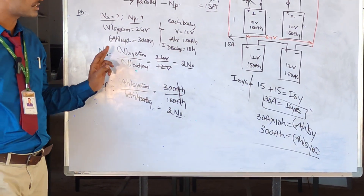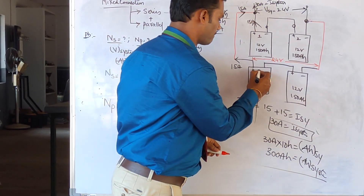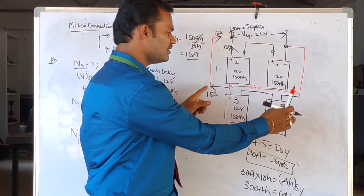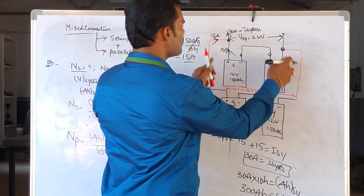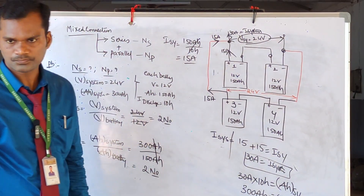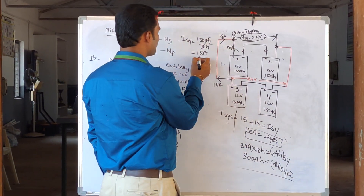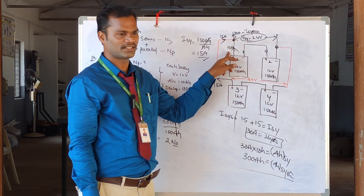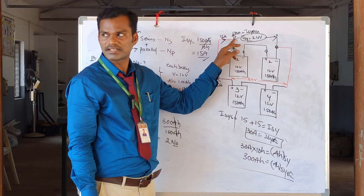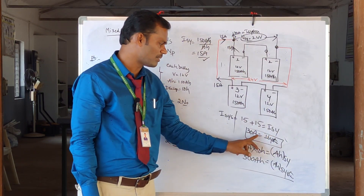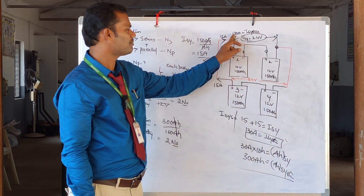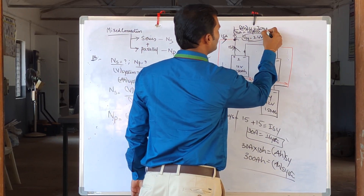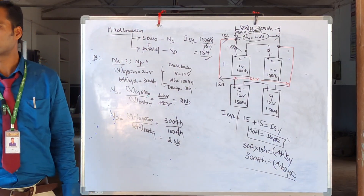To summarize: the first and second batteries are connected in series to generate 24 volts. The third and fourth batteries are also connected in series generating 24 volts. Both series sets are then connected in parallel. Each set supplies 15 Amperes, so applying KCL, 15 + 15 = 30 Amperes is the system current. The total AH capacity is 30 Amperes × 10 hours = 300 AH, which is the required system capacity.